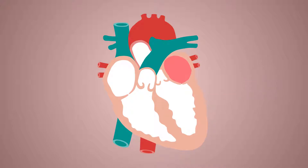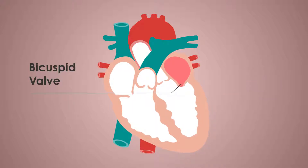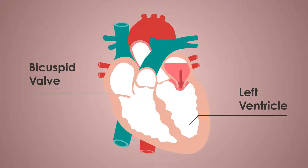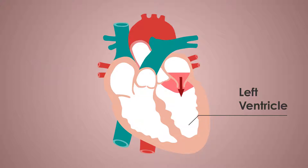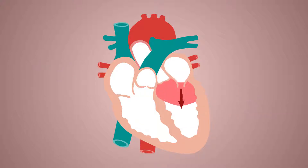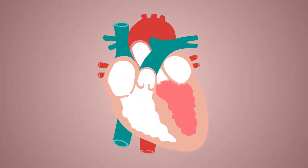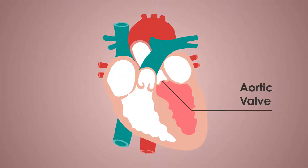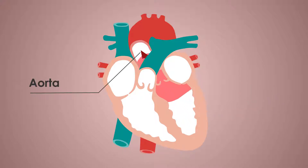The left atrium contracts, forcing blood through the bicuspid valve and into the left ventricle. Following a momentary pause to allow ventricular filling, the left ventricle then contracts, with the resultant pressure causing the shutting of the bicuspid valve and the opening of the aortic valve, ejecting oxygenated blood into the aorta.